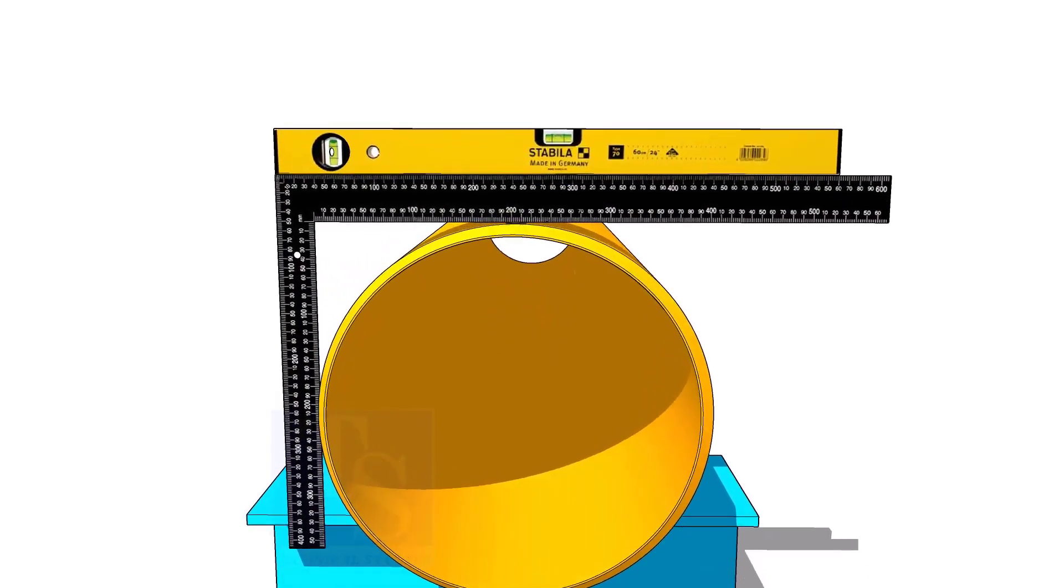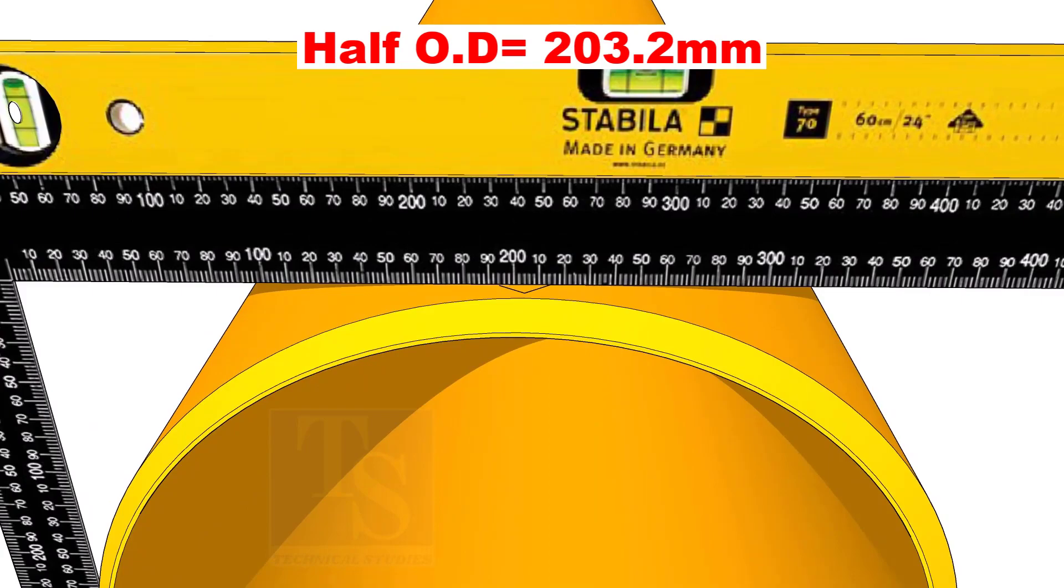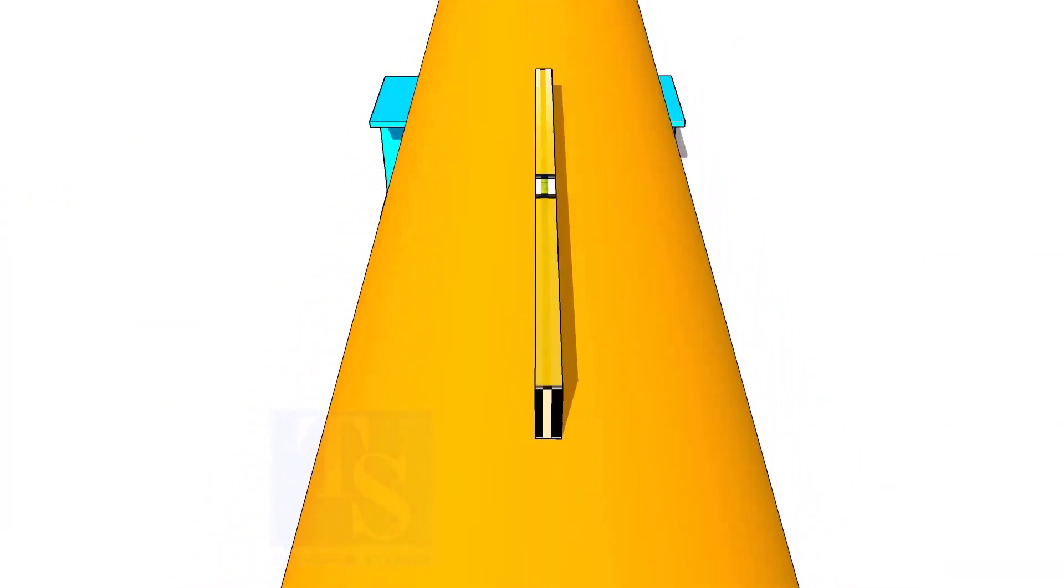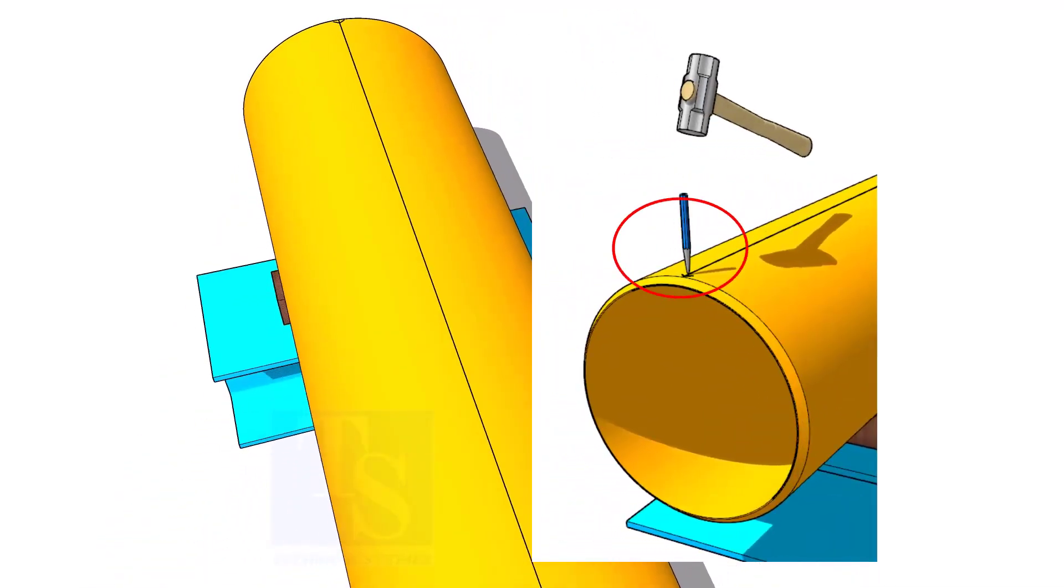Mark the half OD on the top of the pipe. Don't forget to cross-check from the opposite side. Mark the center of the other end of the pipe and draw a line. If required, punch mark the line ends.